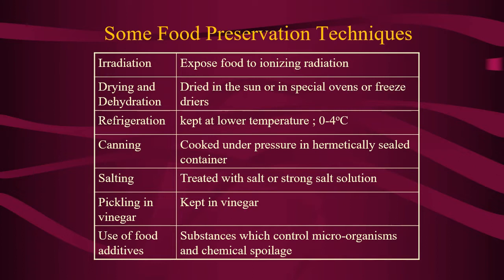Looking at this table, these are food preservation techniques widely used in the food industry. The first is irradiation — exposing food to ionizing radiation. The second is drying and dehydration, where food products are dried in the sun, in special ovens, or in freeze dryers. The third is refrigeration, which we do at home, keeping food at lower temperatures between 0 to 5 degrees Celsius.